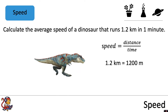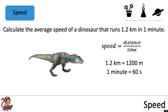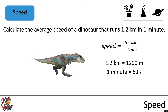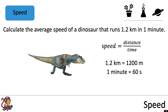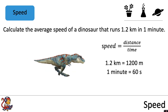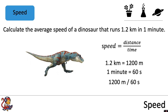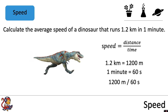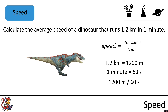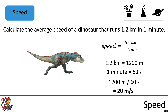Similarly, we need to change minutes into seconds, so one minute is equal to 60 seconds. To calculate the speed of our dinosaur, we do 1200 meters divided by 60 seconds, and the speed would be 20 meters per second.